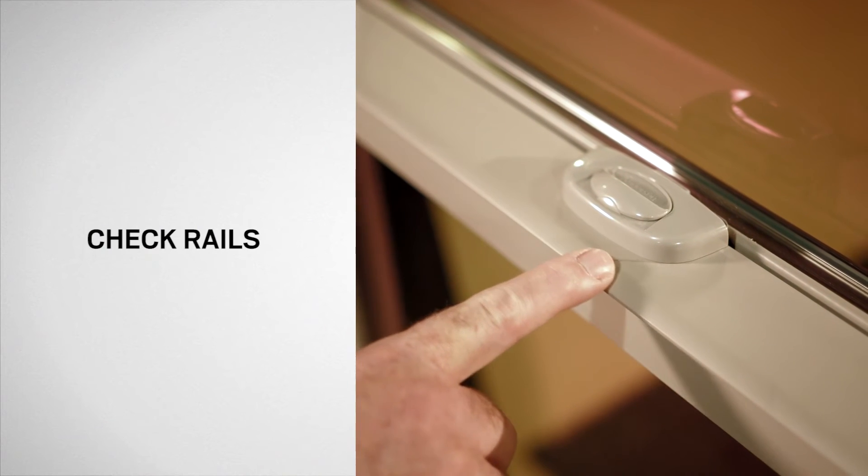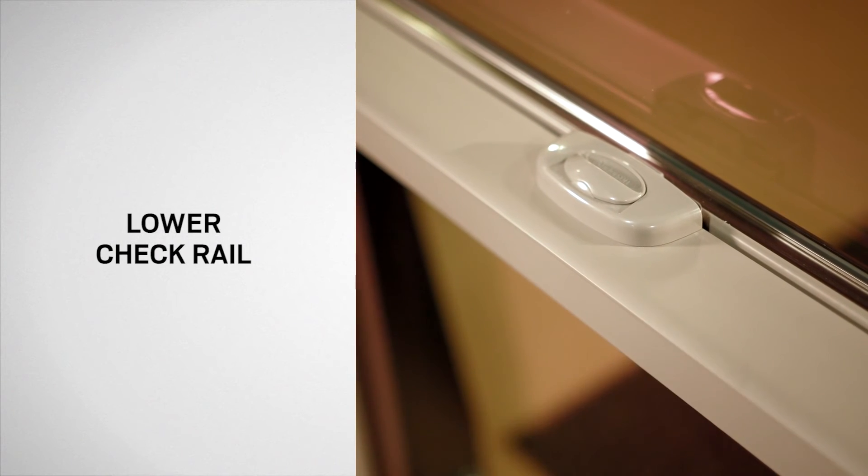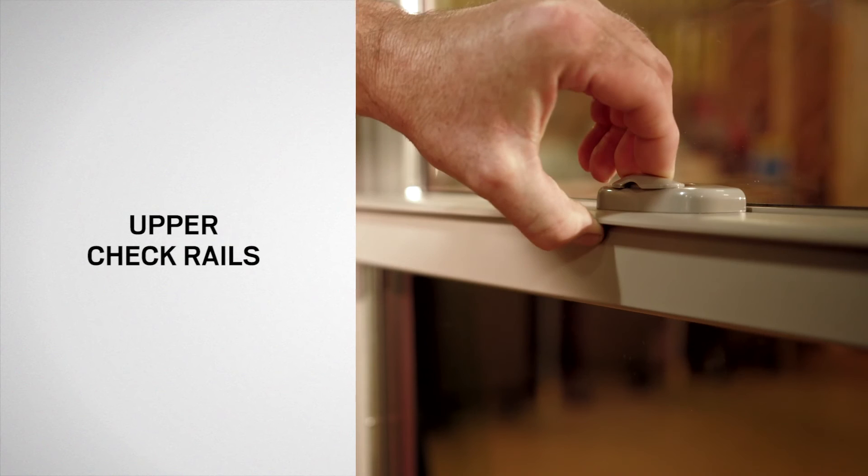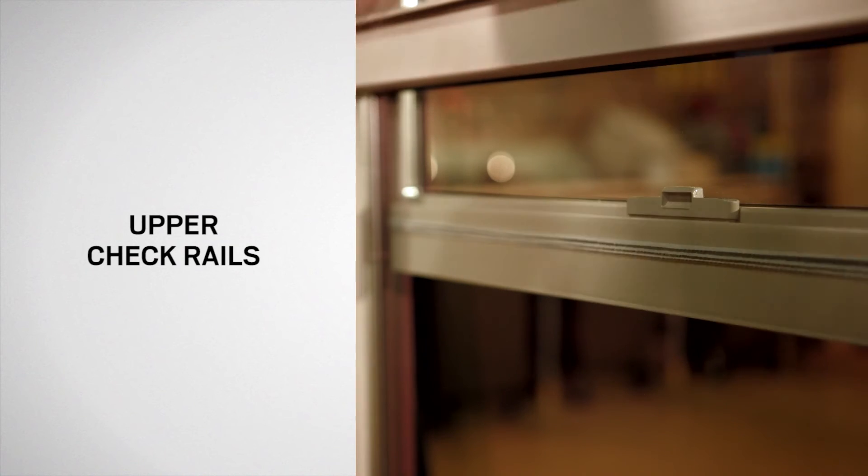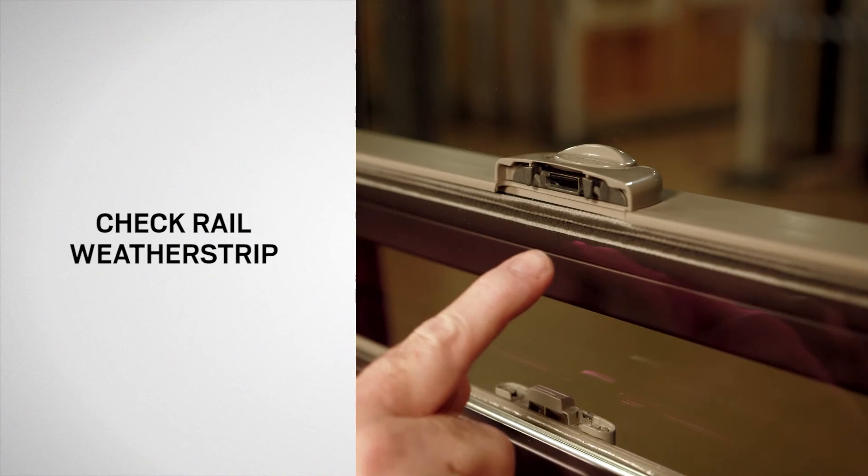Check rails are where the two sash meet. The lower check rail is at the top of the bottom sash and the upper check rail is at the bottom of the top sash. The check rails feature a pile weatherstrip designed to seal where the two sash meet.